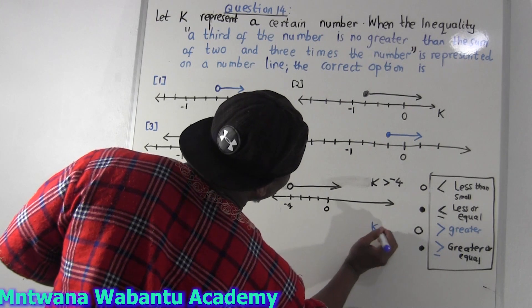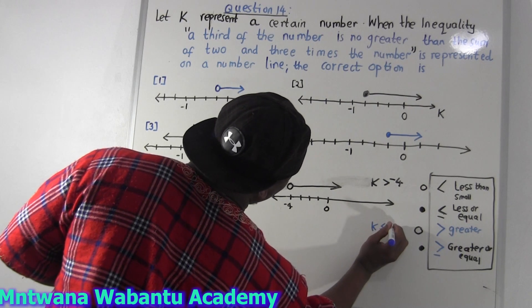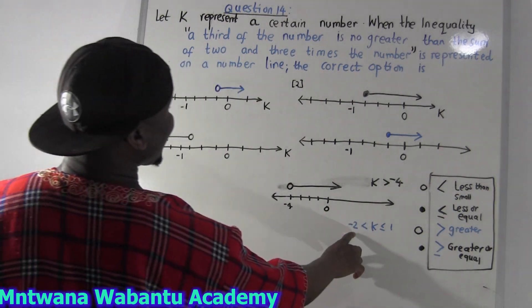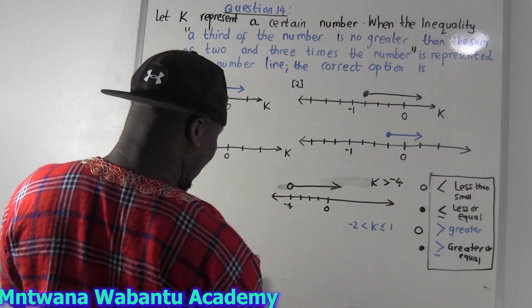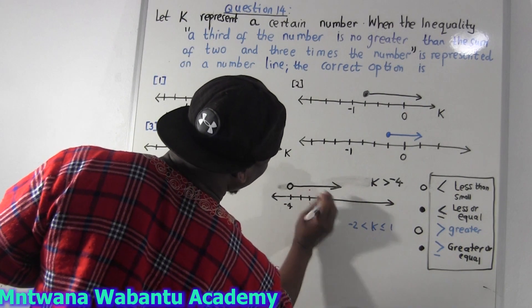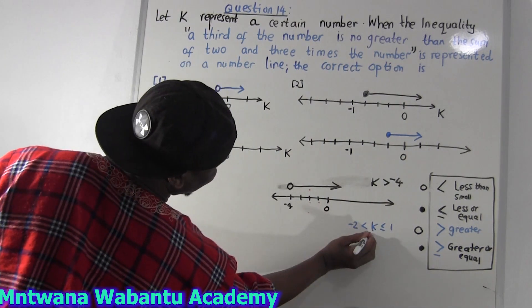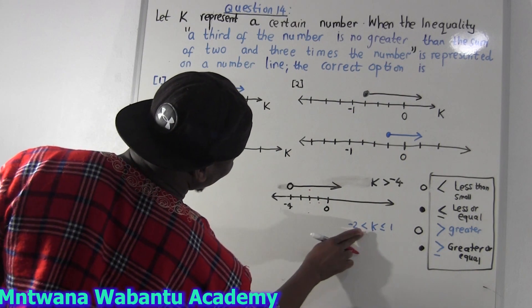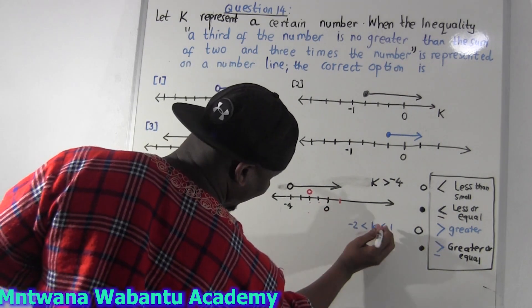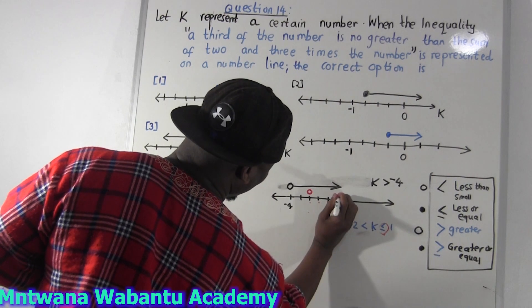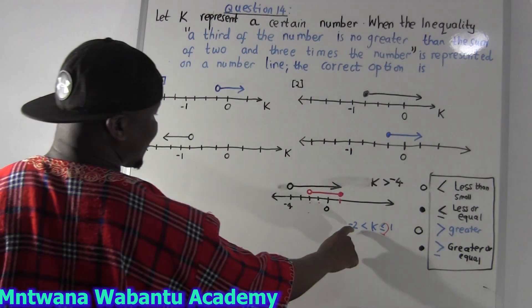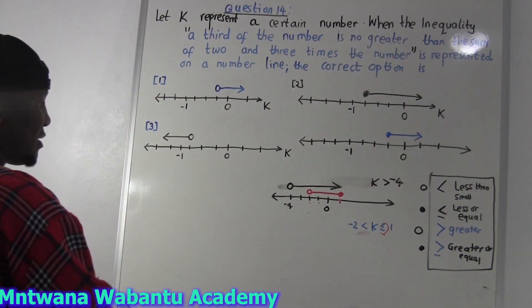Now let's say K is between 1 and negative 2. So you start from negative 2 and end at 1. Negative 2 could be here — let's say this is 0, negative 1, negative 2 here. We put an open circle at negative 2 because it's excluded. The last point is 1, and 1 is included because of the less-than-or-equal sign, so 1 gets a solid dot. Then you connect them, because K goes from negative 2 to 1.